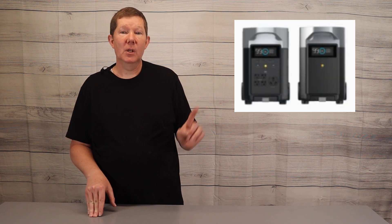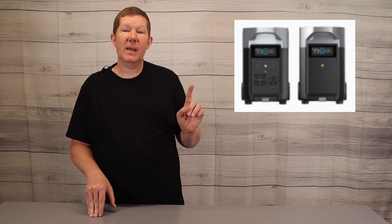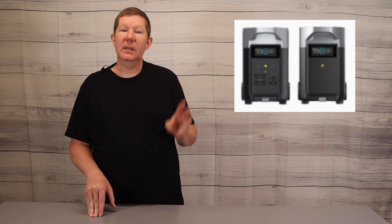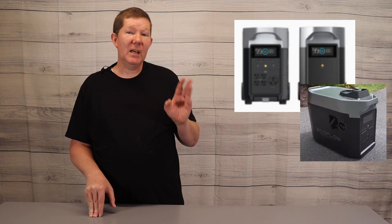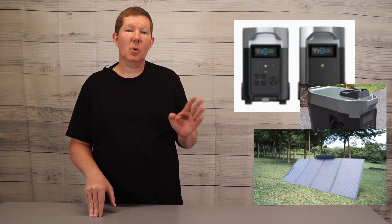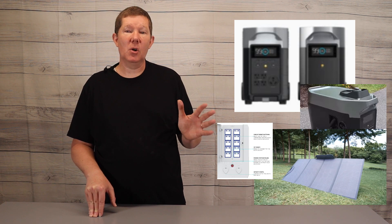So for my 7.2 kilowatt setup, here's what you need. You need one Delta Pro. You need one smart extra battery. You need the smart generator. You need up to four of the 400 watt solar panels. And you need the smart home panel.